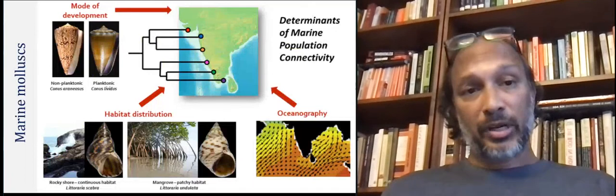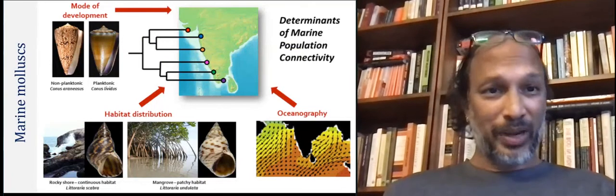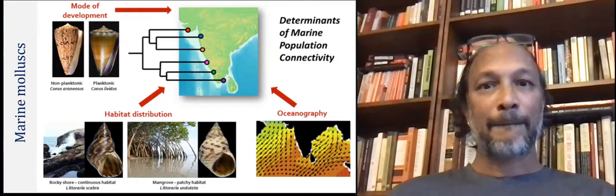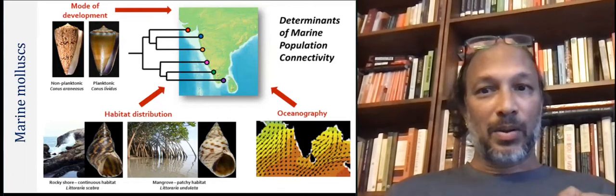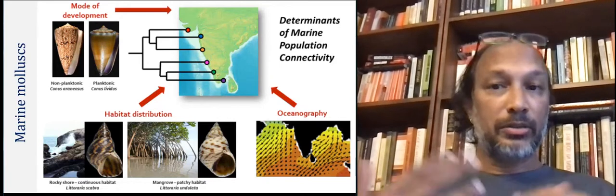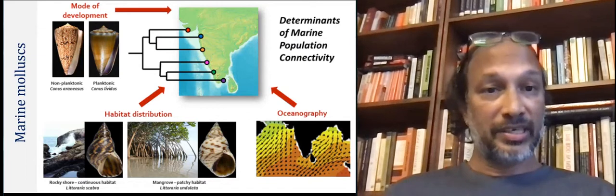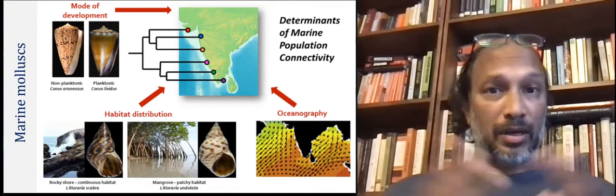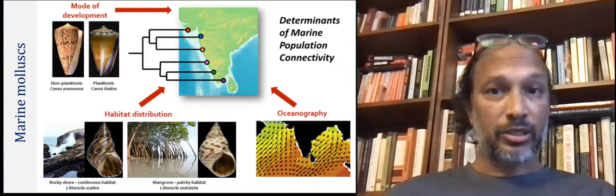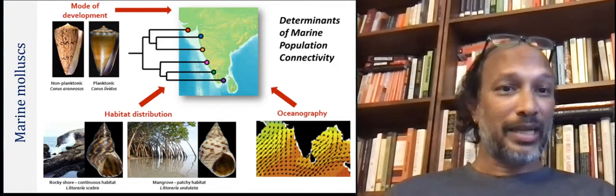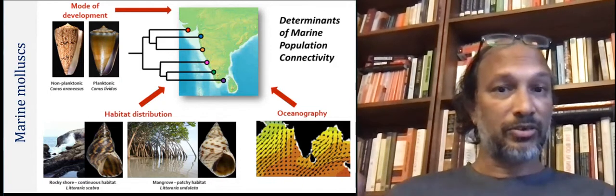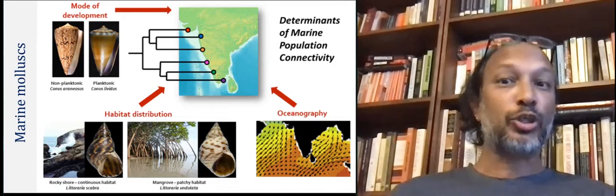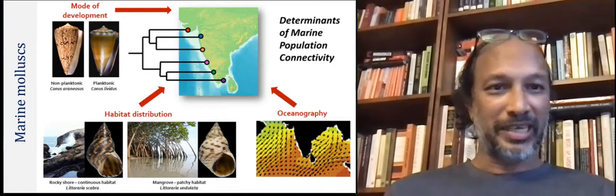As an aside, one of my students also studied marine mollusks, which gave us an opportunity to examine these questions in marine ecosystems. In addition to habitat and life history traits and their influence on marine population genetic structure, you can also look at the influence of passive dispersal through ocean currents — and therefore the impacts of oceanography on marine population connectivity.